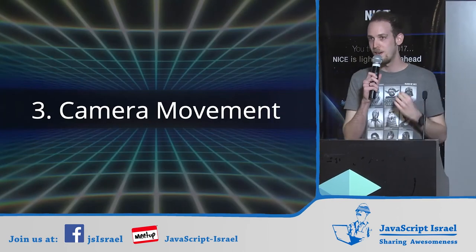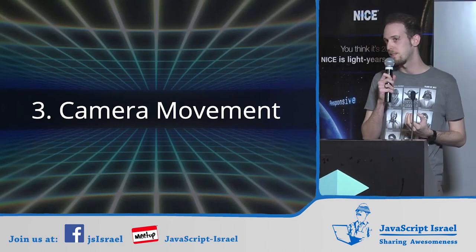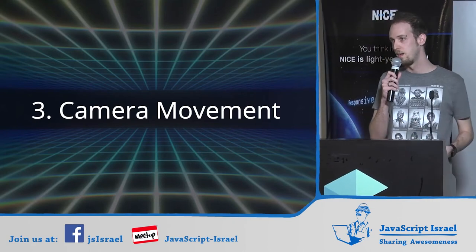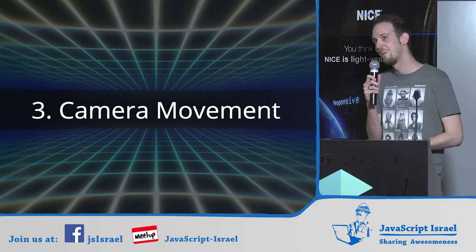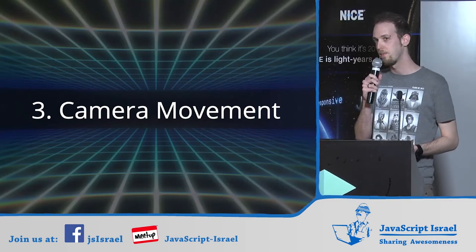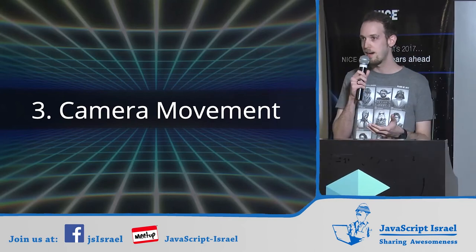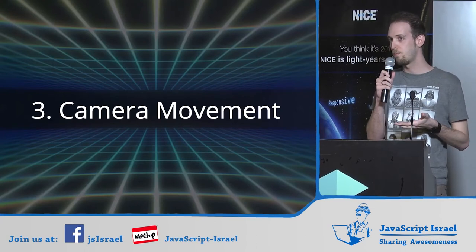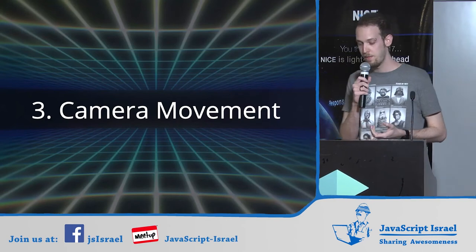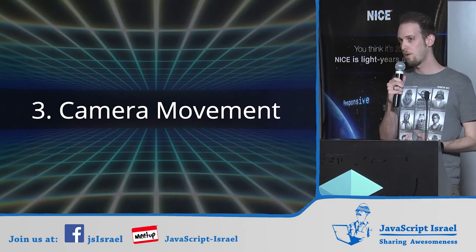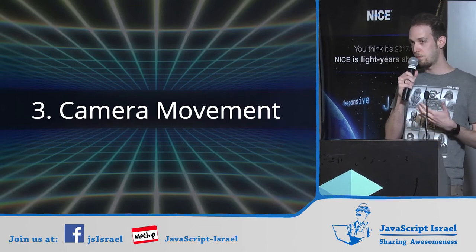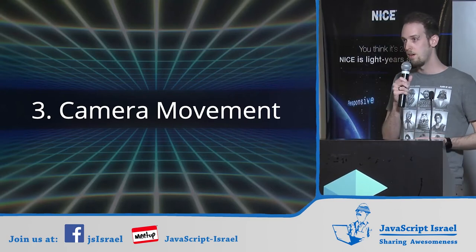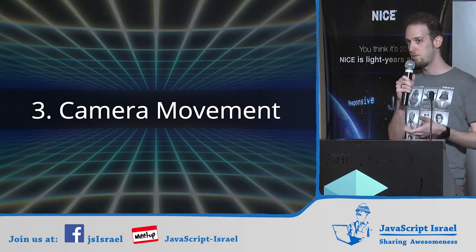Next: camera movement. What is camera movement in the context of websites? In a game, you have your world, your character, your items — everything happening in the world — and you see it through a virtual camera that the game designer placed there so you can experience it. By using the same techniques from video and film, you can apply them to a website to do some actually cool things.